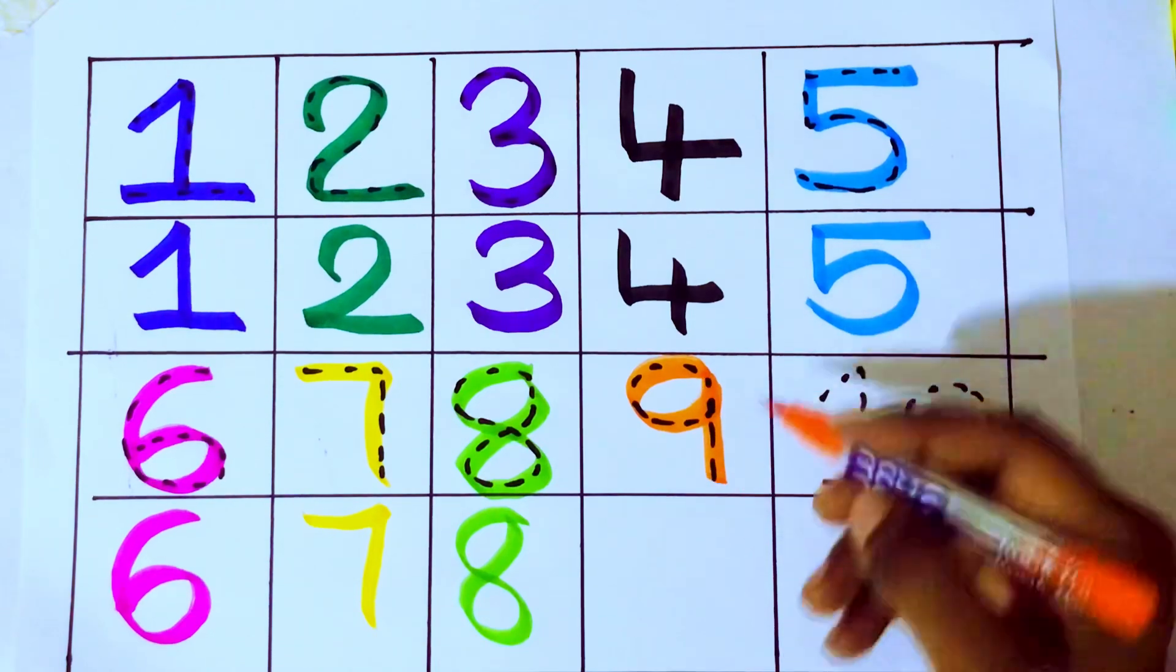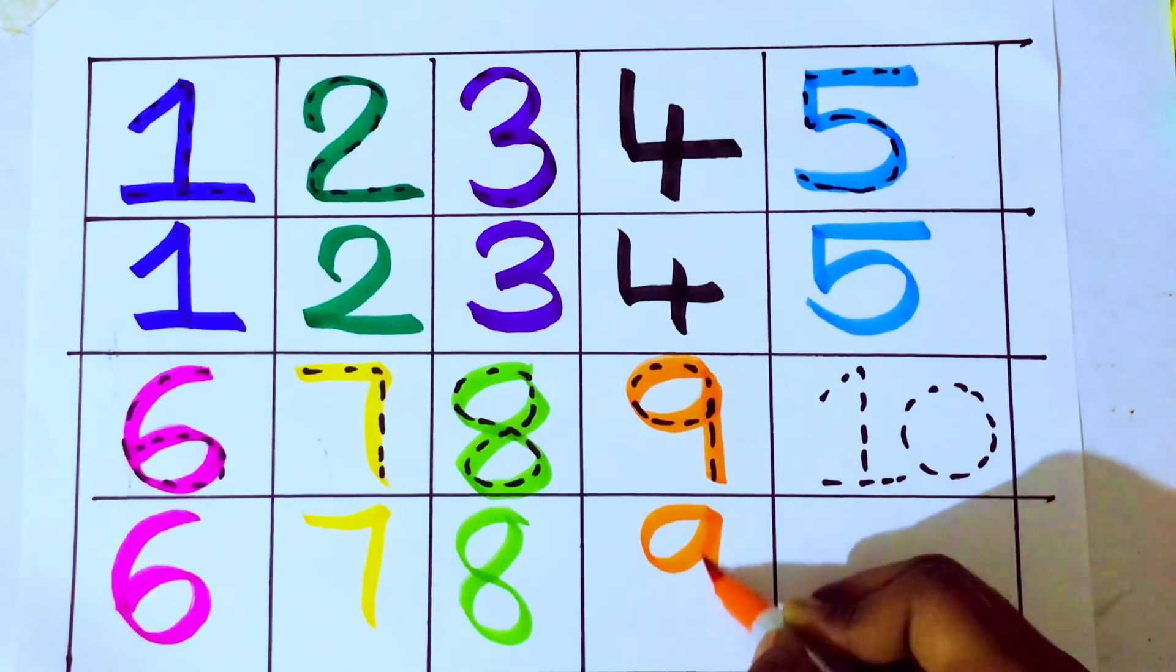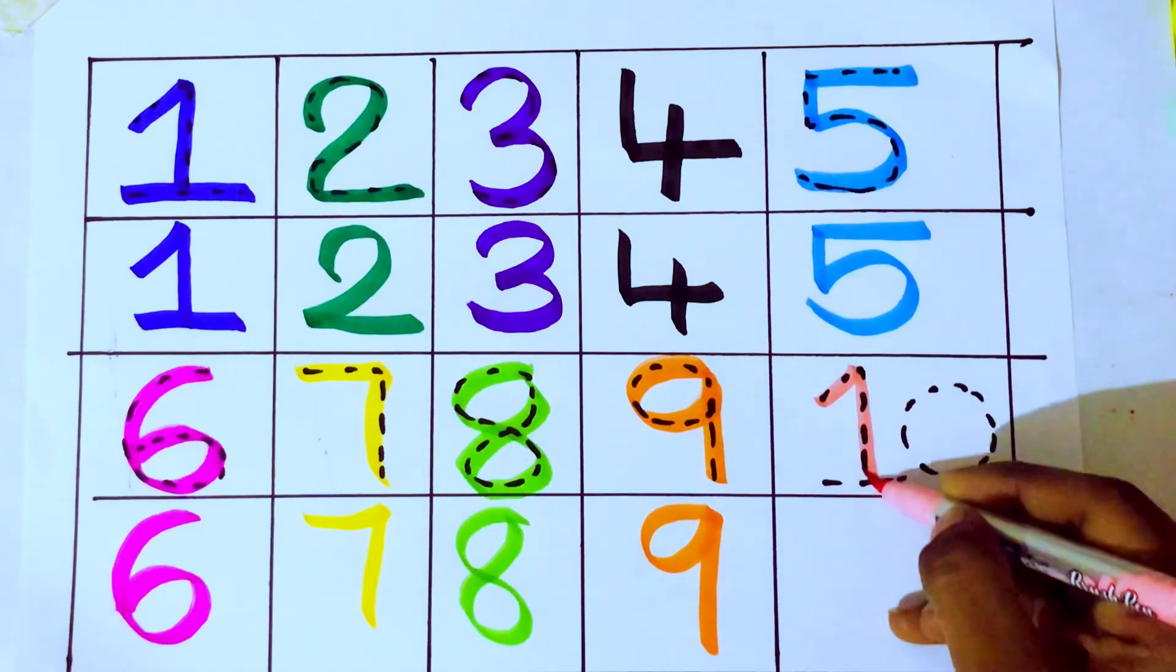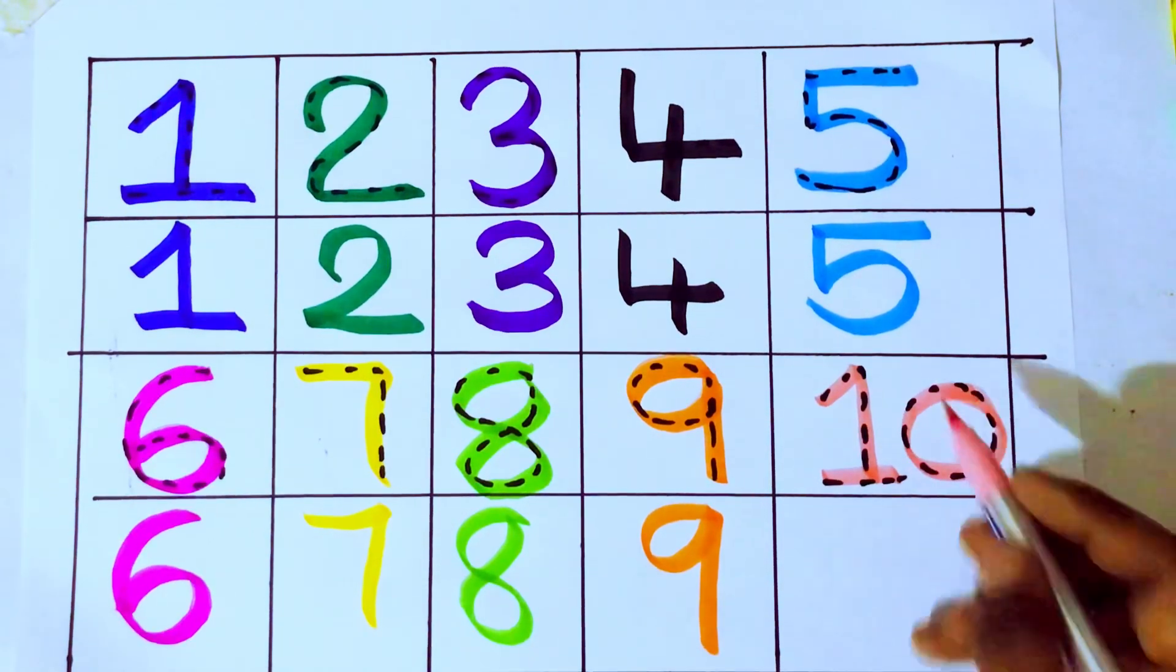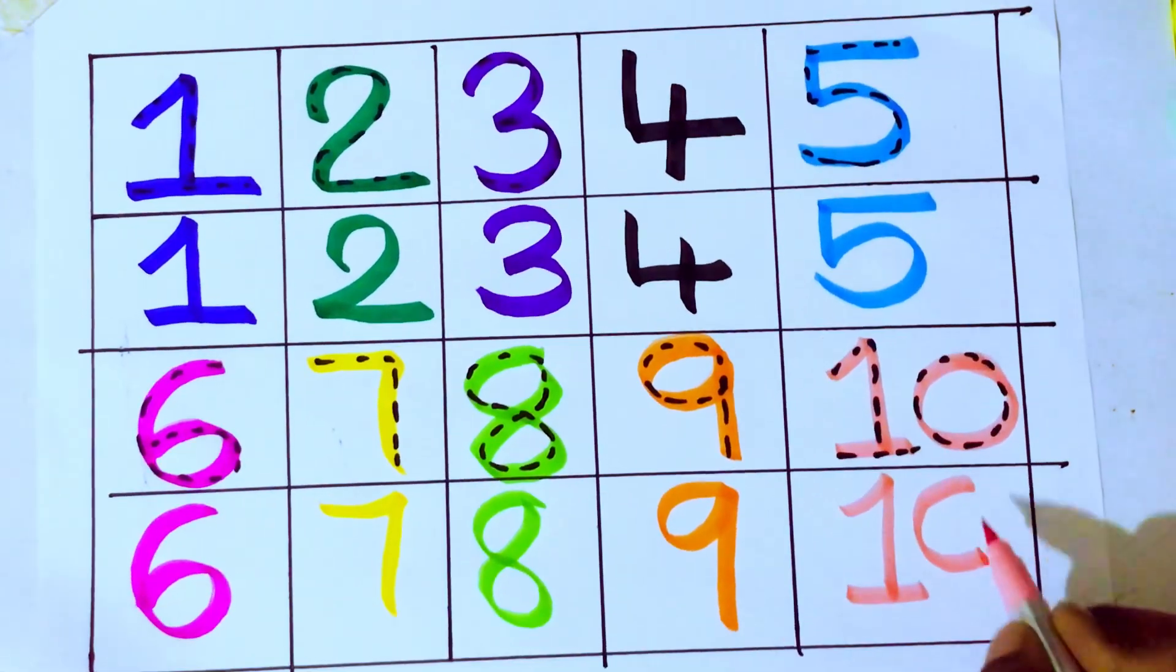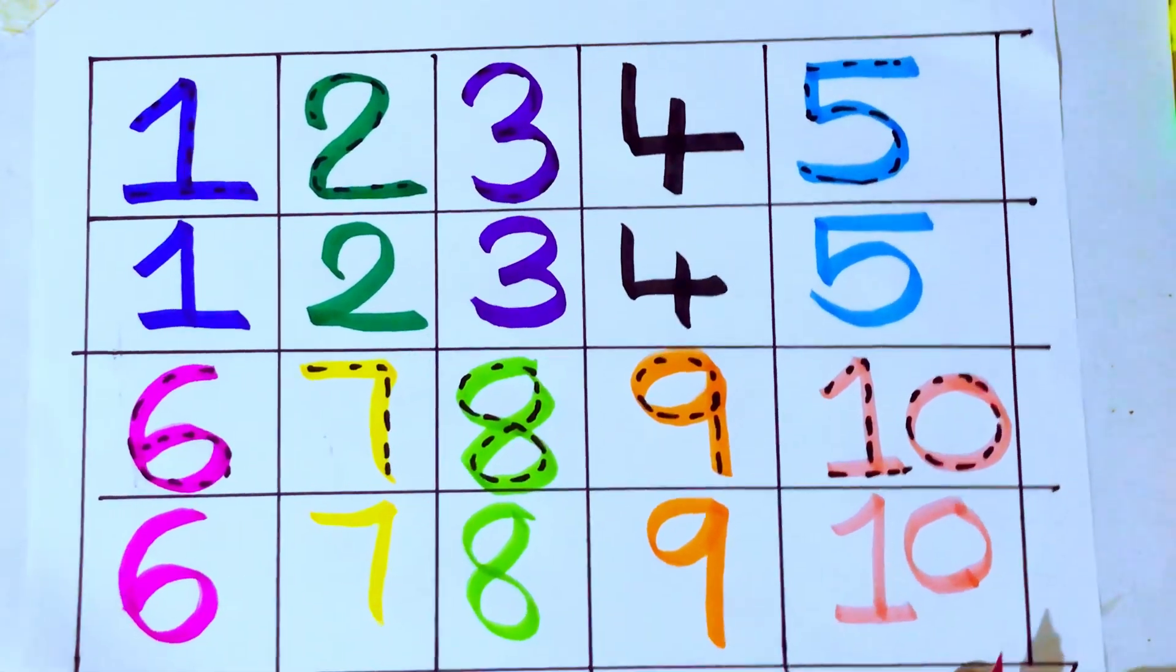8 after 9. Which number kids? 9. N-I-N-E. 9. Pink color. 10. T-E-N. 10. Which number kids? 10. T-E-N. 10. Okay.